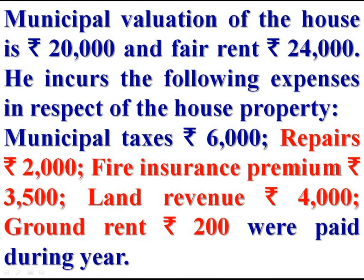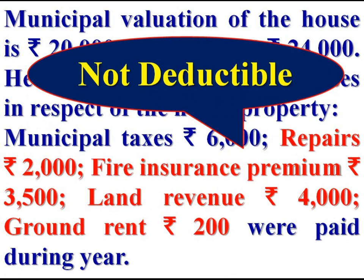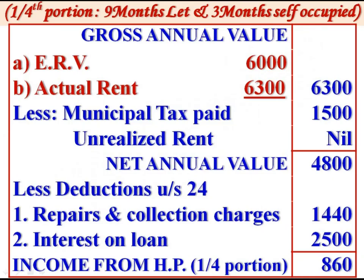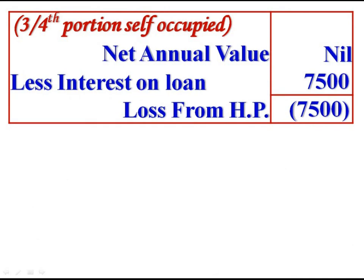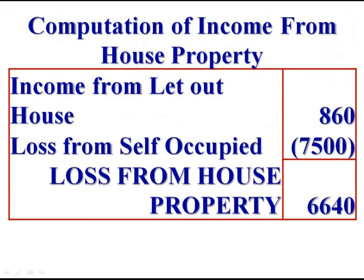In the problem, we are given actual amount of Rs 2,000, fire insurance premium Rs 3,500, land revenue Rs 4,000, and ground rent Rs 200. These items have no deductions from the computation of income from house property and are to be ignored. Our final answer: one-fourth portion (nine months let out, three months self-occupied) — income Rs 860. Three-fourth portion (self-occupied) — loss Rs 7,500. Income from let-out property Rs 860 minus loss from self-occupied property Rs 7,500 gives a net loss from house property of Rs 6,640.